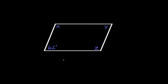In this video I'm going to teach you how to find the angles and lengths of a parallelogram. A parallelogram is just a shape with four sides and it has two sets of parallel lines. So this side is parallel to this side, and this side up here is parallel to this side down here.